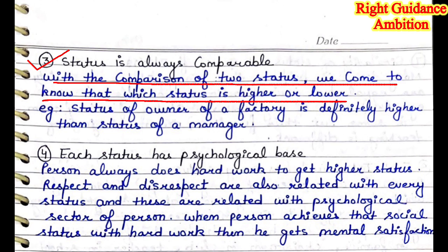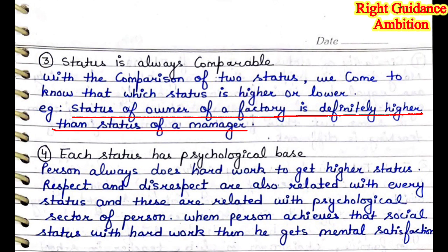Third point: status is always comparable. With the comparison of two statuses, we come to know which status is higher or lower. When we compare statuses, we know which status is higher or lower. For example, the status of the owner of a factory is definitely higher than the status of a manager. So, the owner of the factory or company has a higher status.